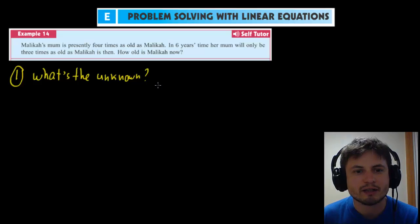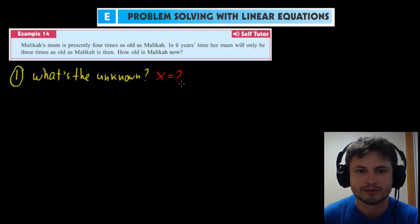And step number one is this: what is the unknown? What are we looking for here? So basically in other words what is X? Where is X? Who is X? And in this case, in this particular question, the X is at the end of the question. How old is Malika? So Malika's age is X. This is Malika's age, age of Malika M.